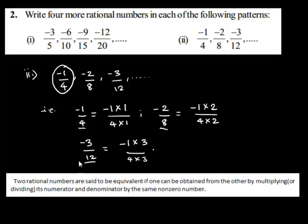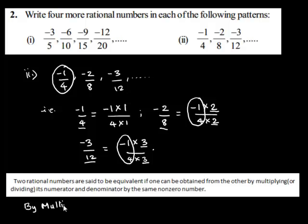So, as you can see, negative 2 upon 8 is obtained when negative 1 upon 4 is multiplied by 2, both on the numerator and on the denominator. Similarly, negative 3 upon 12 is obtained when negative 1 upon 4 is multiplied by 3, both on the numerator and in the denominator. So we have obtained the first 3 terms of this pattern by multiplying negative 1 upon 4 with 1, 2, and 3 respectively.